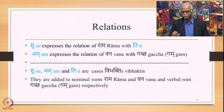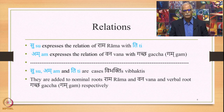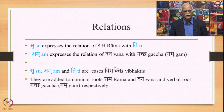To recap: Su expresses the relation of Rama with Ti, and Am expresses the relation of Vana with Gama. In this way, Su, Am, and Ti are Vibhaktis or cases. They are added to nominal roots Rama and Vana, and the verbal root Gama respectively. These Vibhaktis indicate the relations.